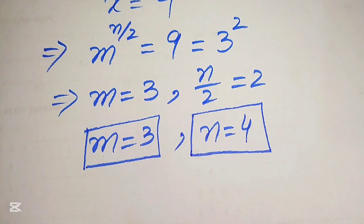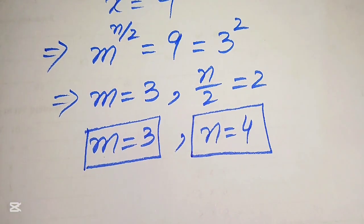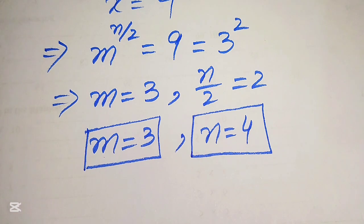These are the two natural values of m and n — this is the final answer. Thank you so much for watching this video. Please subscribe to my channel for more exciting videos.